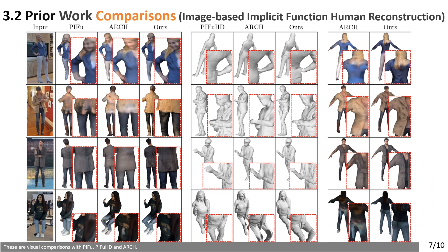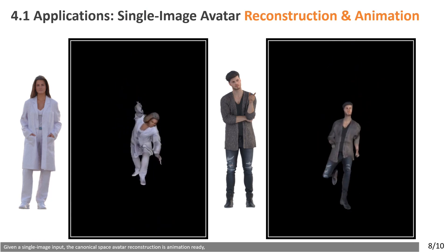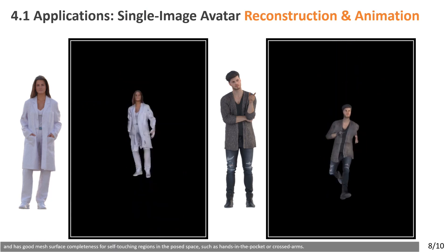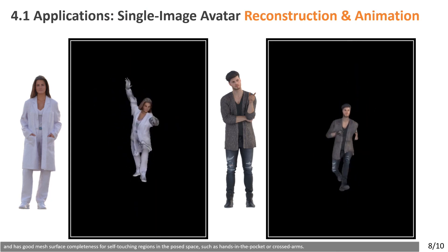These are visual comparisons with PIFU, PIFUHD, and ARC. Our method can generate sharp texture and geometry details across different views, and also has fewer reconstruction artifacts than the competing methods, such as blurry texture patterns, wrong normal directions, and shape distortions. Given a single image input, the canonical space avatar reconstruction is animation-ready and has good mesh surface completeness for self-touching regions in the pose space, such as hands in the pocket or crossed arms.